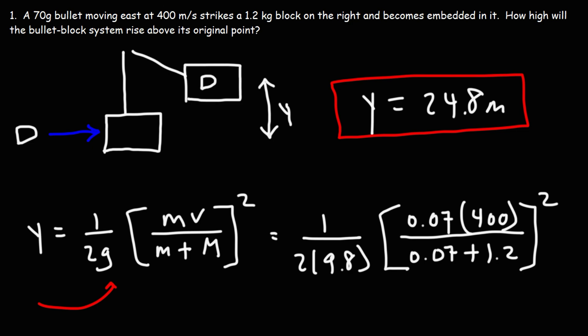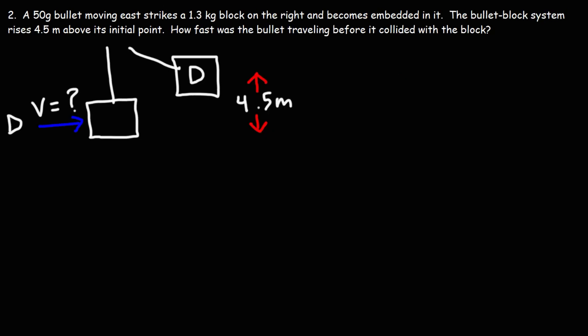So feel free to take a look at that when you get a chance. Now let's work on a similar but slightly different problem. In this problem, we want to find the initial speed of the bullet before it collided with the block. We're given the height at which the bullet-block system rises above its initial point, and that's 4.5 meters. We know the mass of the bullet, the mass of the block. We just need to calculate the initial speed of the bullet.